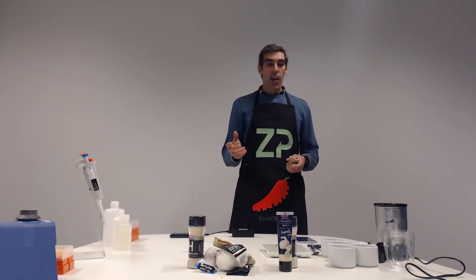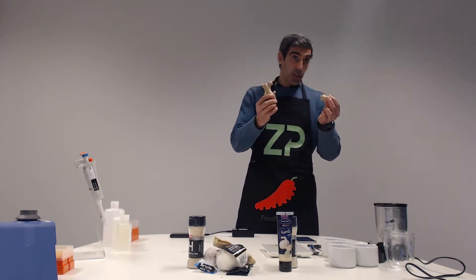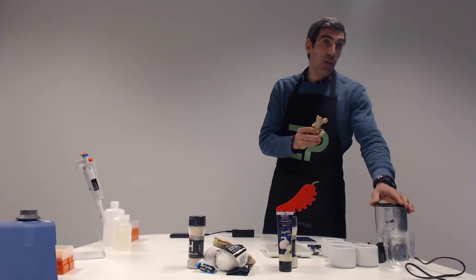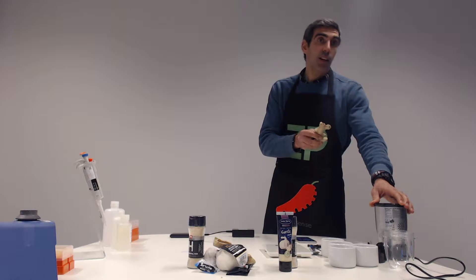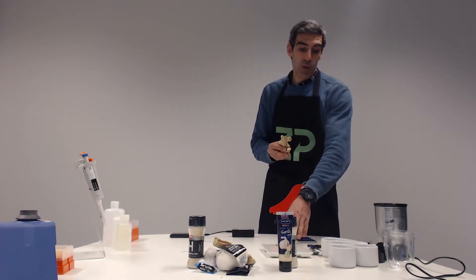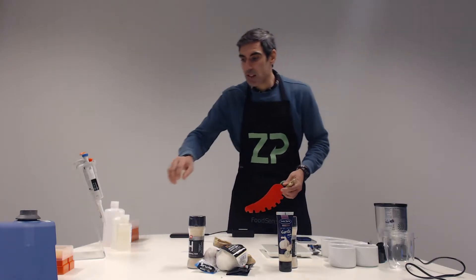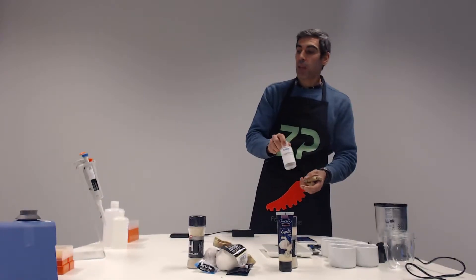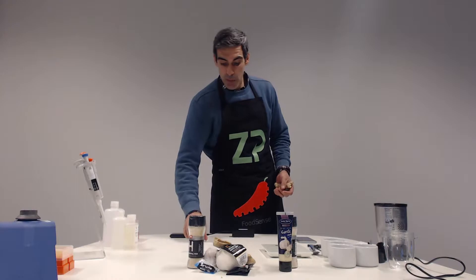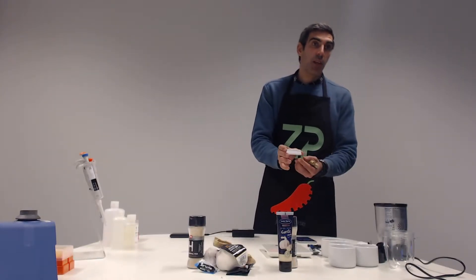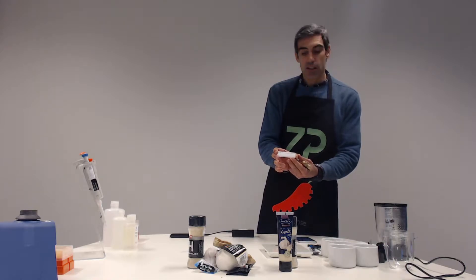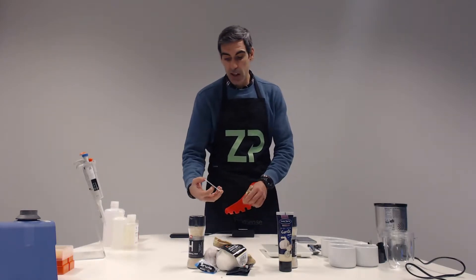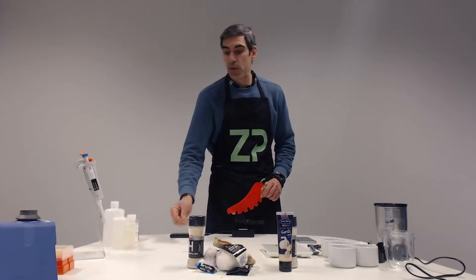For doing that we have ginger root which we are going to process in a grinder, in a food blender, and from that we will weigh one gram of that sample and mix it with a ginger pot buffer solution from our sister company, Alexia. Then we will apply it to one of our ZP ginger sensors and measure it. We'll connect it to our FoodSense device and measure it in our FoodSense app.